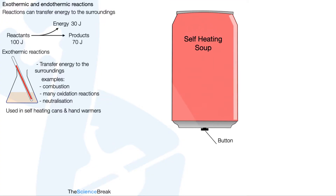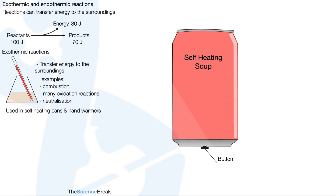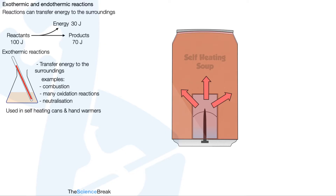In terms of a self-heating can, here's a small diagram to show the idea. We have some self-heating soup and there's a little button at the bottom of the can. When we press the button we pierce a little membrane, which causes two chemicals to mix and causes an exothermic reaction which heats our soup.